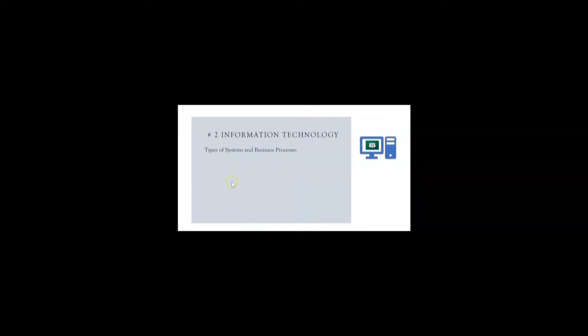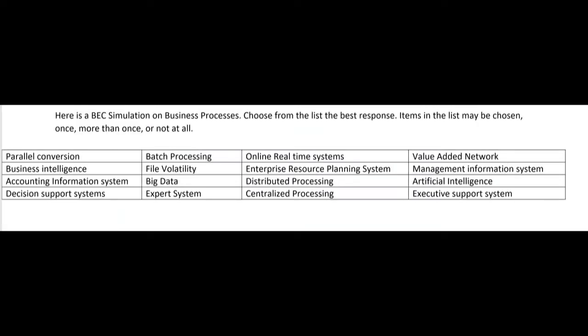Here is a BEC simulation on business processes. Choose from the list the best response. Items in the list may be chosen once, more than once, or not at all — so you may end up choosing batch processing twice in two different numbered items, or you may not use it at all. Let's go through this list and make sure we understand what these terms mean.